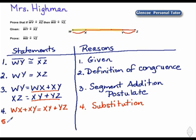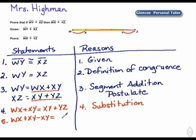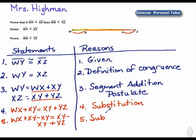Now we're going to use some subtraction. We're going to take W-X plus X-Y and subtract X-Y, and do the same on the right side of the equation — X-Y plus Y-Z, subtract X-Y. We can do that by the subtraction property of equality: if we subtract something on one side, we have to keep it equal on the other.